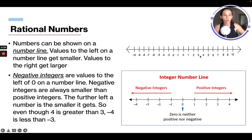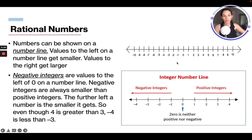So even though 4 is greater than 3, negative 4 is less than negative 3. Numbers get smaller as they move to the left, so 4 is greater than 3. But if we look at negative 4 and negative 3, negative 4 is actually smaller than negative 3. On an integer number line, we have our positive integers, our negative integers, and 0 is neither positive nor negative.